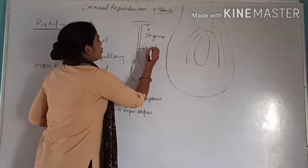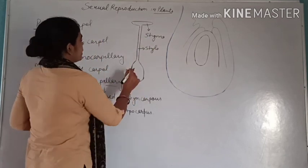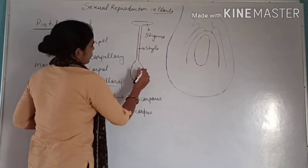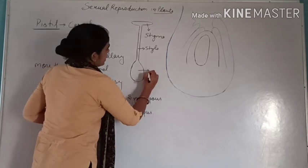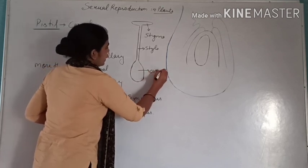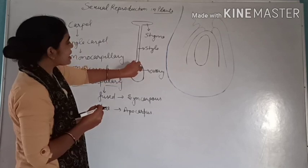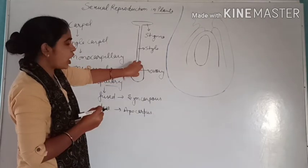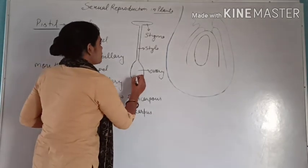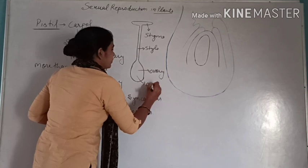Through the style, the pollen tube will move. The bulging region below the style is the ovary, and the space inside the ovary is called the ovarian cavity.